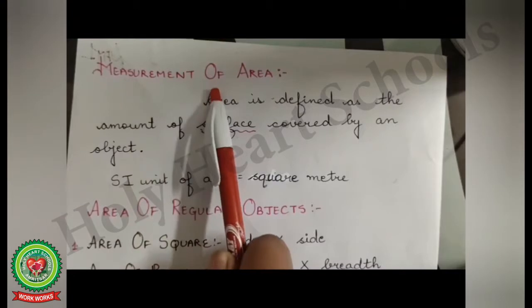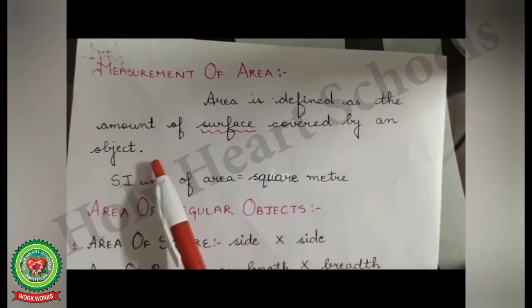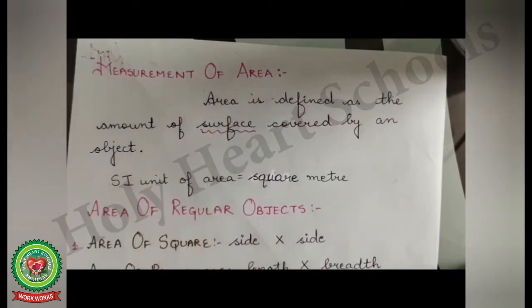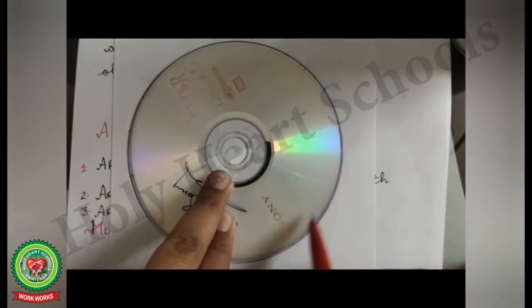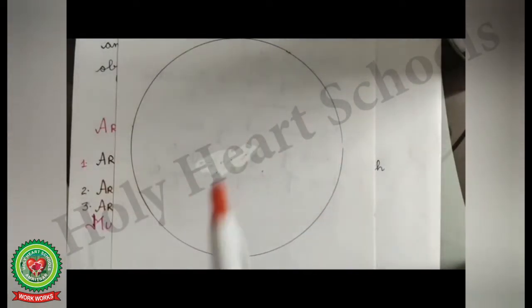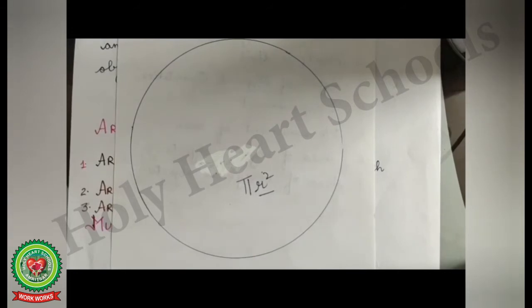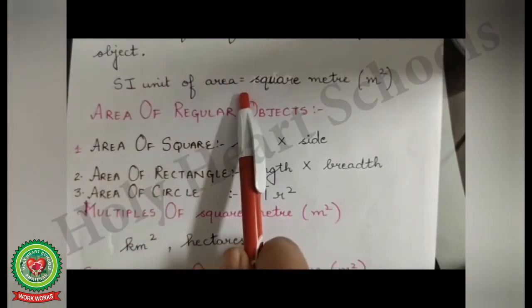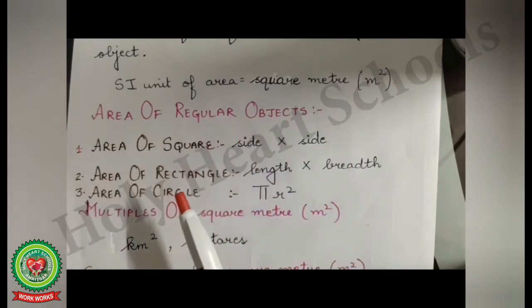Measurement of area: area is defined as the amount of surface covered by an object — how much surface is covered by an object defines its area. To measure the area of this disc, I will make an outline of the disc on a white sheet of paper, then find the area of this circle using the formula pi r squared, where r is the radius of the circle. The SI unit of area is square meter, denoted by m².